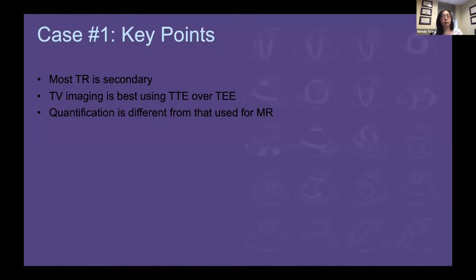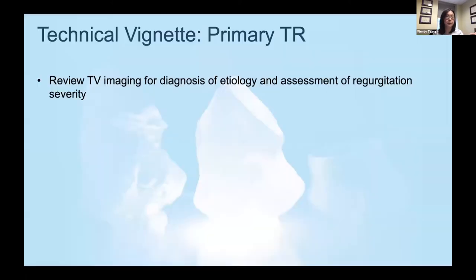The key points I'm going to cover: most TR is actually secondary, not primary, like this patient. Tricuspid valve imaging — transthoracic echocardiogram is complementary and probably more informative for a clinical cardiologist than transesophageal. There are lots of challenges in doing transesophageal because of the location of the tricuspid valve. And TR quantification is actually different from that used for mitral regurgitation.